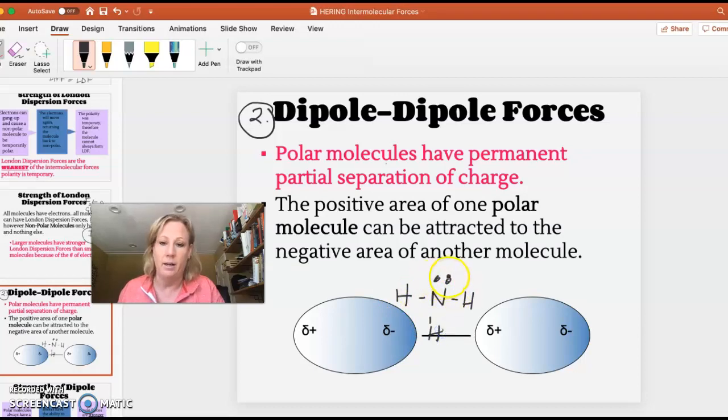This is a polar molecule, it's always negative up here and positive down there. So if I have another nearby ammonia, then this is the attraction.